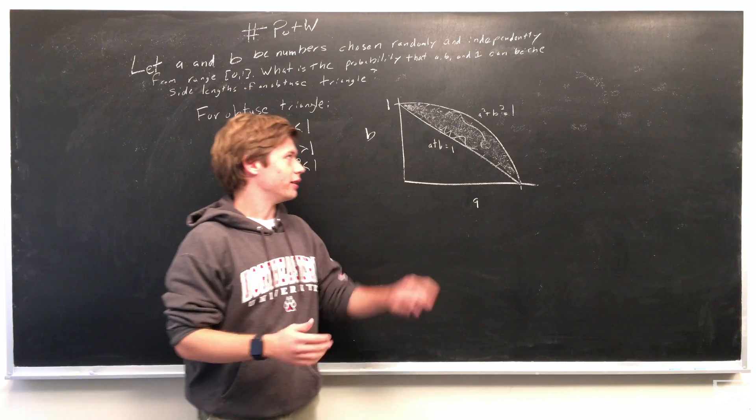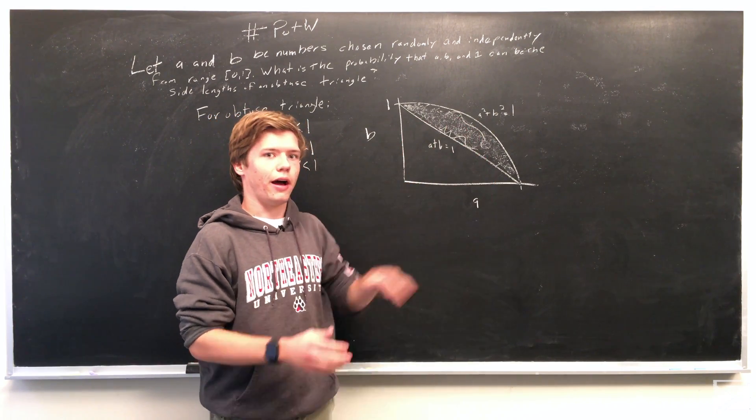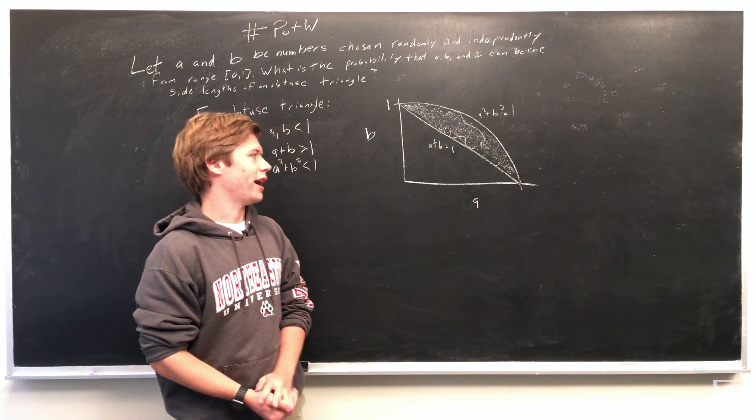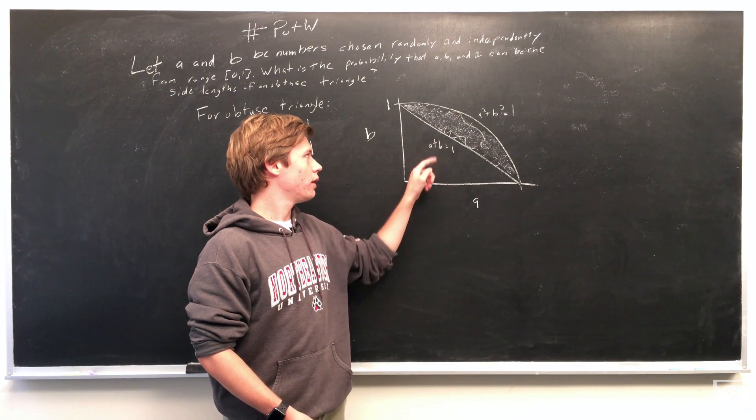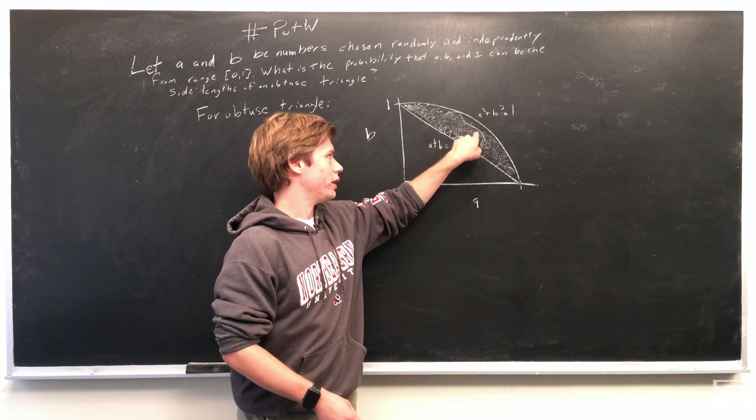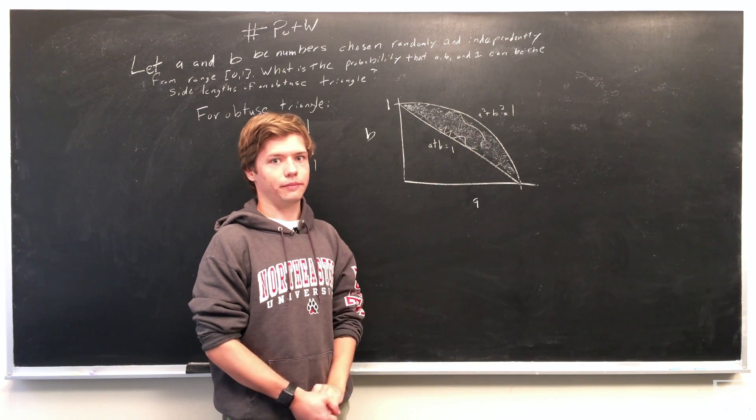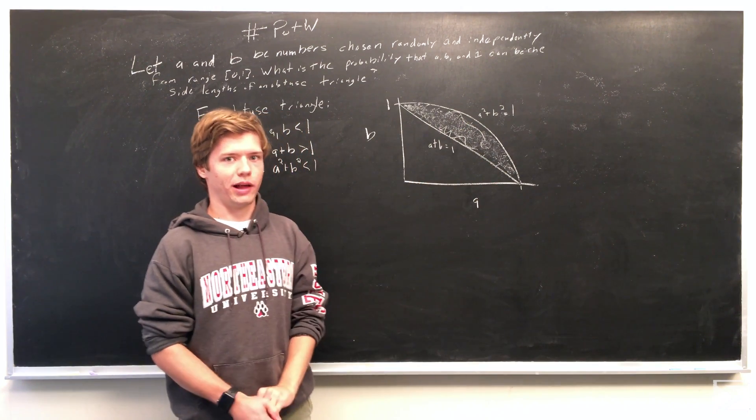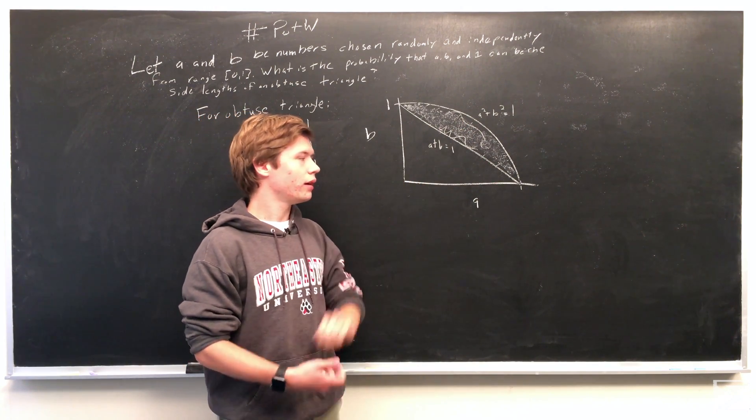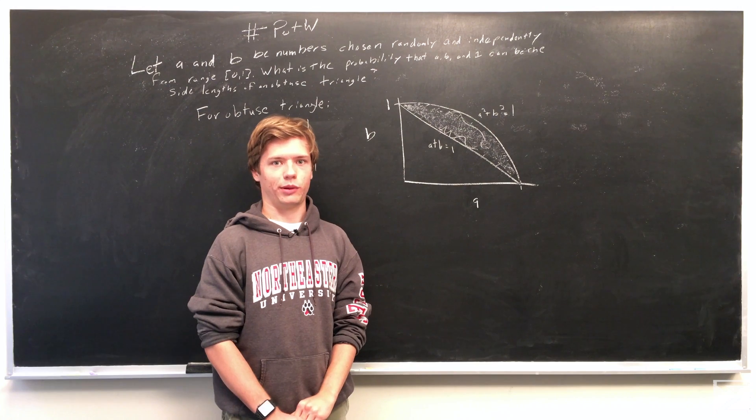You can see this is the area such that if we have point A and point B in the coordinate system, if we have a point here, anywhere in this area, we will have a side length of A and B such that if they were paired with 1, we would have an obtuse triangle.